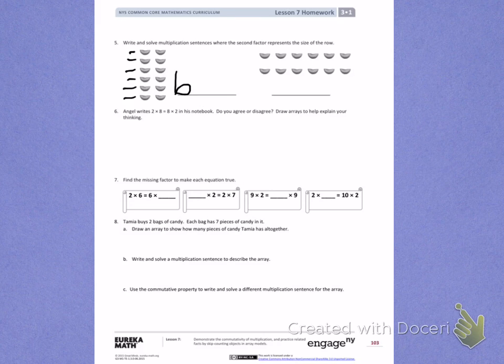Next, I'm going to look at the size of each row. In each row, I have 2. 6 times 2.